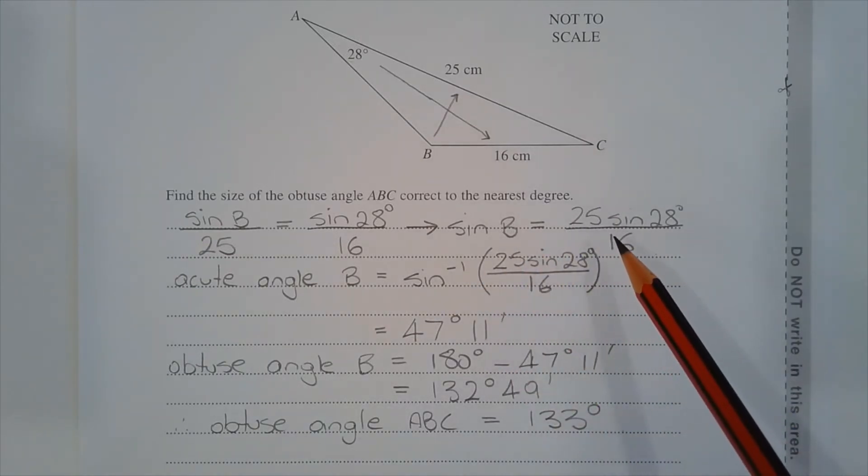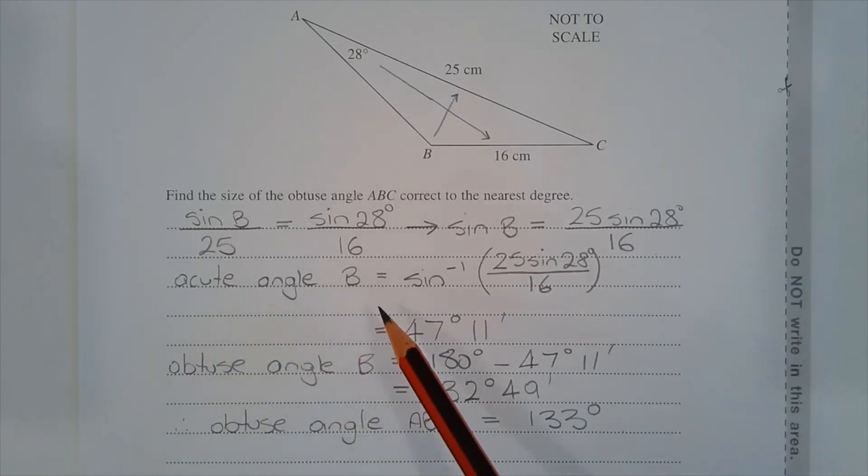Taking the inverse sine of both sides to make angle B the subject of the formula, we get acute angle B is equal to inverse sine of 25 multiplied by sine of 28 degrees over 16. And that equals 47 degrees and 11 minutes correct to the nearest minute.